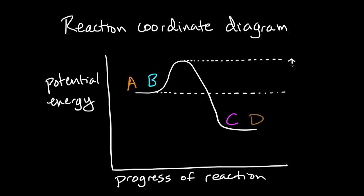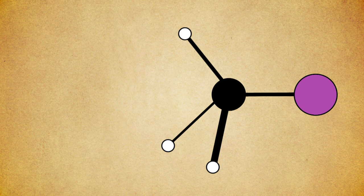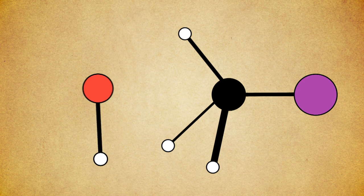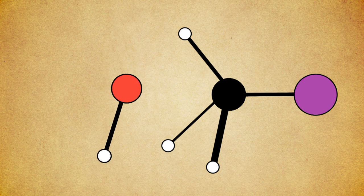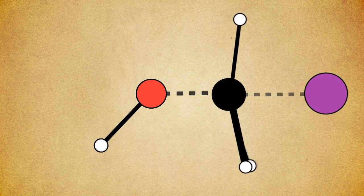This hump is the activation energy — the point of highest potential energy of the reaction. Two molecules must collide with at least this amount of energy in order to successfully react.